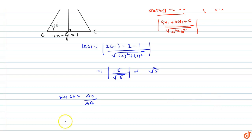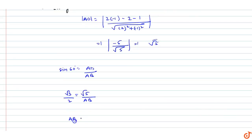So AB sin 60 degrees, which is √3/2, equals AD/AB. We have AD equals √5. So the length of AB will be 2√5 divided by √3.